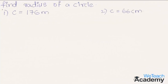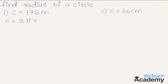Now let us try to solve another example. Here we have to find the radius of a circle when the circumference is given. Coming to the first one where circumference is equal to 176 meters — the formula to find circumference is 2πr, so by substituting the given value we get 176 equal to 2 into 22/7 into r.